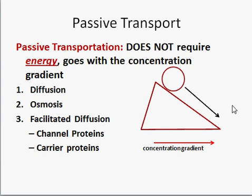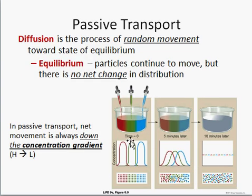Diffusion is the simplest one. If somebody has a cup of coffee in a room, eventually you'll be able to smell it throughout the whole room. Those particles diffuse from an area of high concentration — where the cup is — across the room. If you put drops of color in a beaker, those colors will go from high concentration to low concentration and continue to mix until they reach equilibrium.